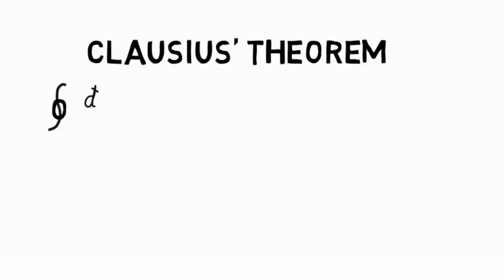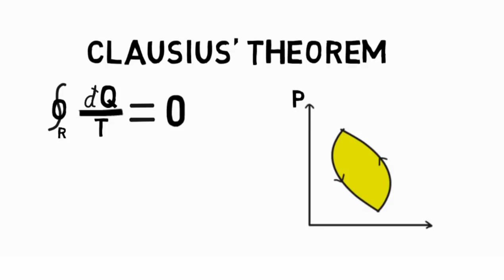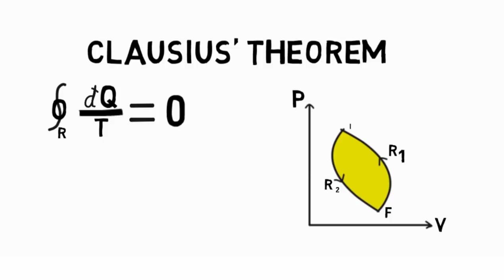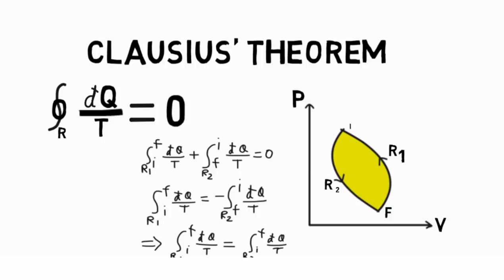Also, Clausius' theorem states that the cyclic integral of dq upon t for a reversible cycle operating between two equilibrium states i and f is equal to zero. This integral can be replaced as a sum of two integrals, one each for r1 and the other for r2, which can be rearranged as r1 equals negative of r2.